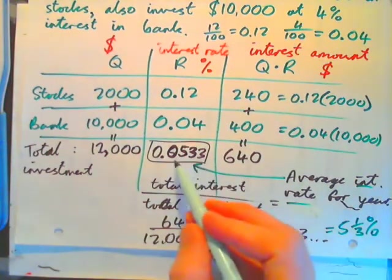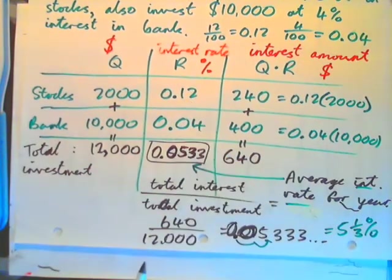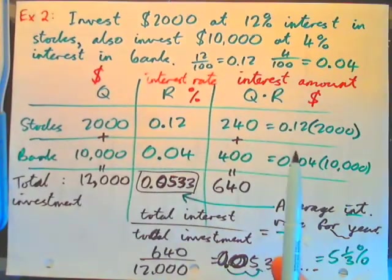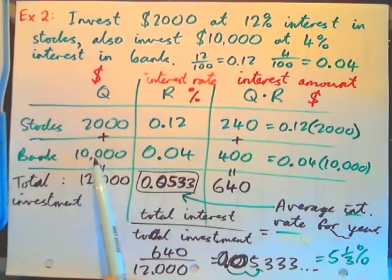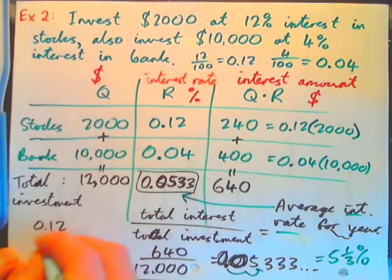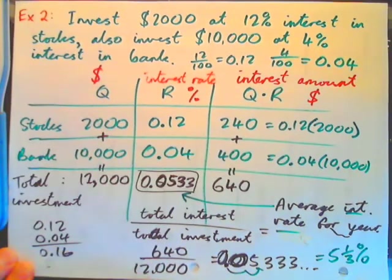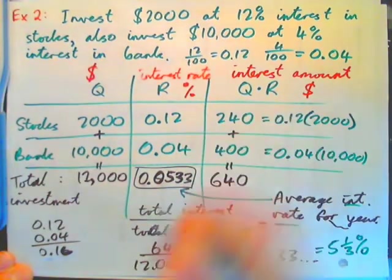Now, what you got to know about this number? It's closer to 4% than 12%. Why is that? We invested more money in the bank or the stocks. We invested more money in the bank. Therefore, our average interest rate should be closer to 4%. And it is. It's a little over 5%. Agreed? And obviously, if you added these together to get 0.16, 16%, would not be the average interest rate. The average interest rate needs to be between these two numbers. Obviously.